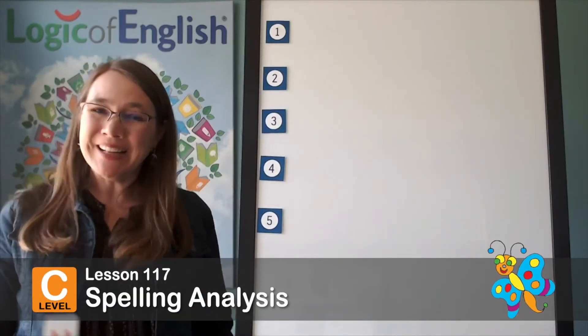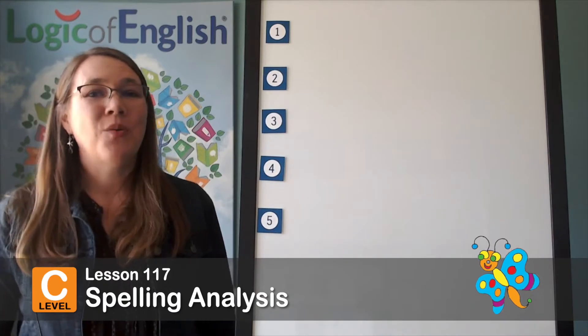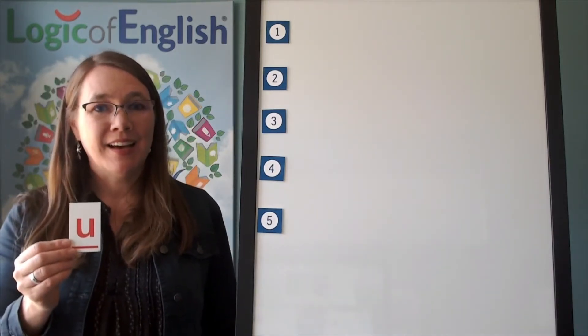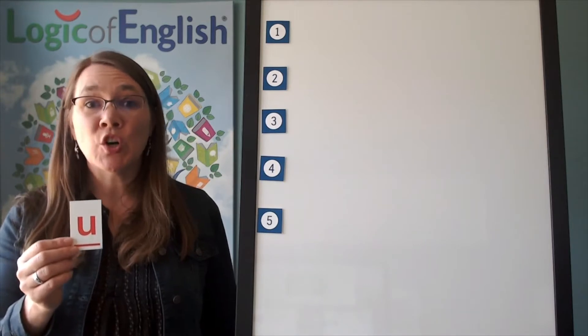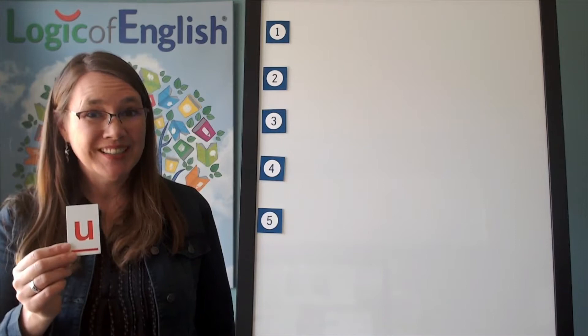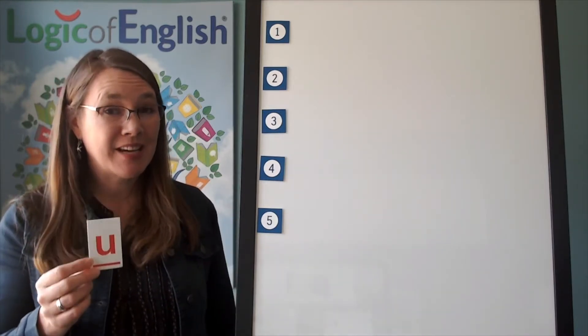Welcome to Spelling Analysis. All right, before we begin, I want to look at something. What does this say? U, U, U. That's right. Do you hear the sound U? All right, keep that in mind. That is the broad sound.